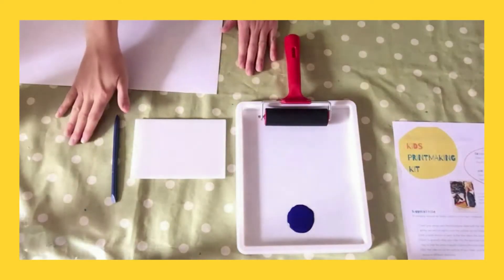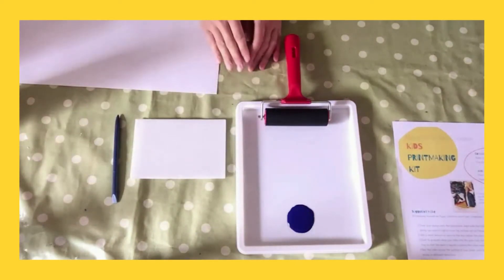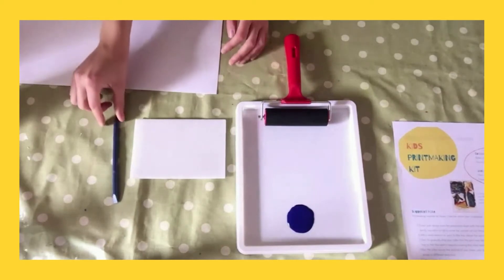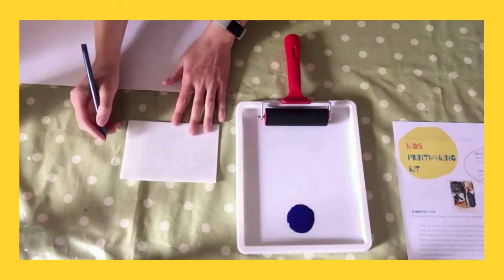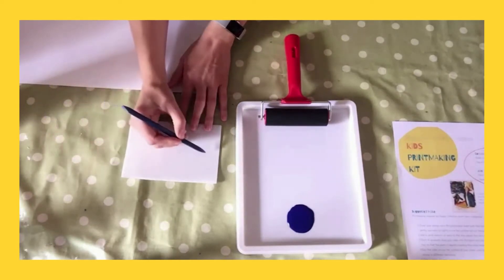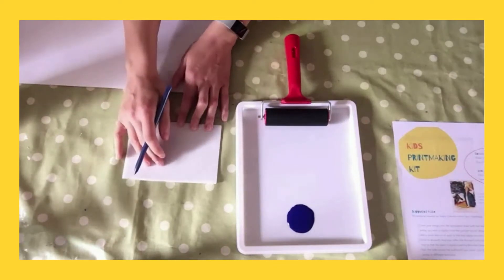Okay so the first thing you want to do is make sure you've protected the surface you're working on and wear an apron as well to protect your clothing. The first step is you want to take your polystyrene sheet and you want to use the tool provided or a blunt pencil to lightly press your design into the sheet.